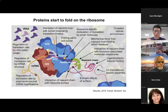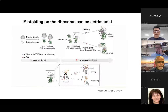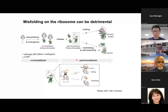The ribosome orchestrates many different events, for example recruiting ribosome auxiliary factors such as trigger factor, as you can see in this figure. Misfolding of protein is very dangerous, as we all know. I don't think to this audience I need to talk much about misfolding and aggregation of proteins.